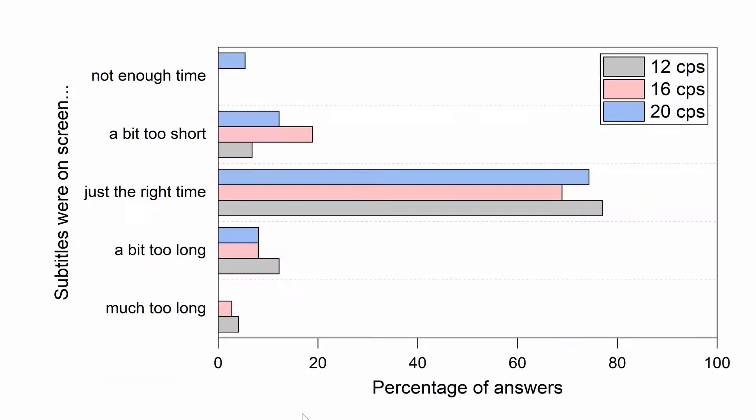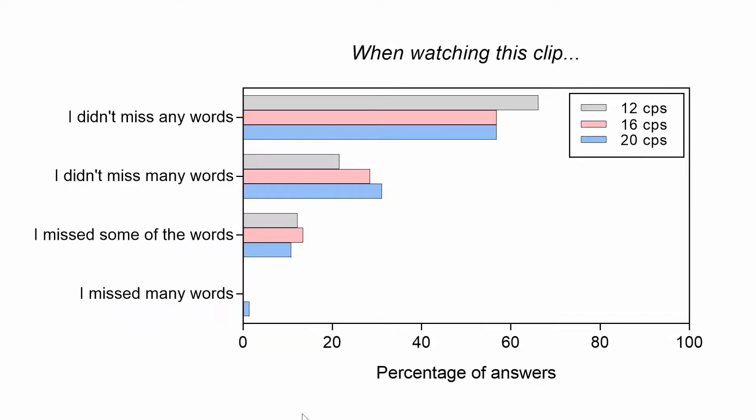When asked to assess the time that subtitles were displayed on screen, most people said that they were on screen for just the right time in all the subtitle speed options. Most people declared not to miss many or any words in all the subtitle versions, including the fastest one.